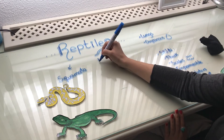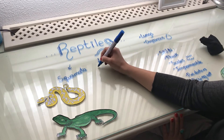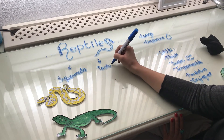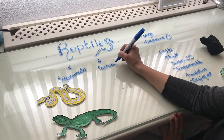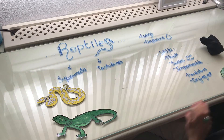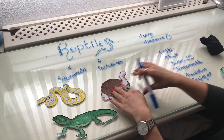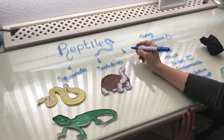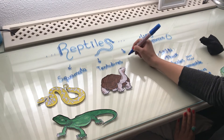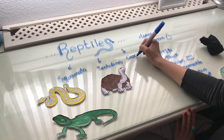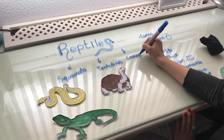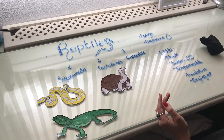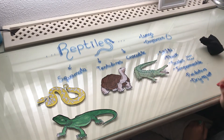In the second group, called Testudines, we can find tortoises. And in the last group, called Crocodilia — like the name says — we are going to find crocodiles.